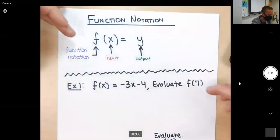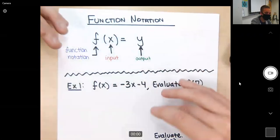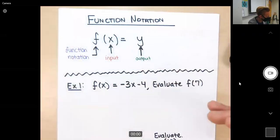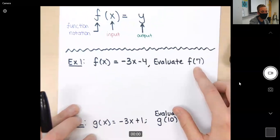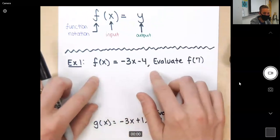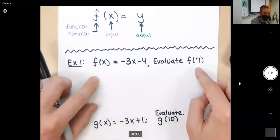Now, we will get more in detail when we start learning our first function, which is linear functions. But as of right now, when we break this down, all we need to do is figure out: do you guys know how to evaluate if I say f(x) equals negative 3x minus 4, what is f(7)?